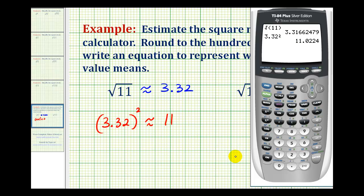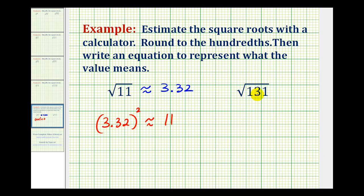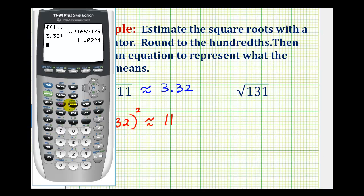Now let's take a look at the second example, which is the square root of 131. So we'll type in 2nd x squared, 131, close parenthesis, enter. Again, rounding to the hundredths, this will be approximately 11.45.